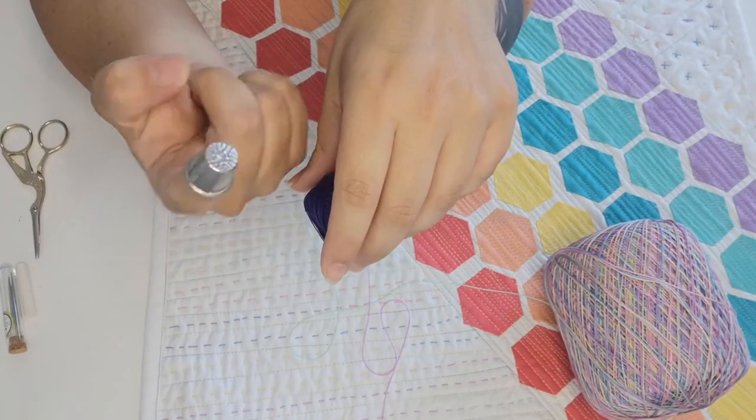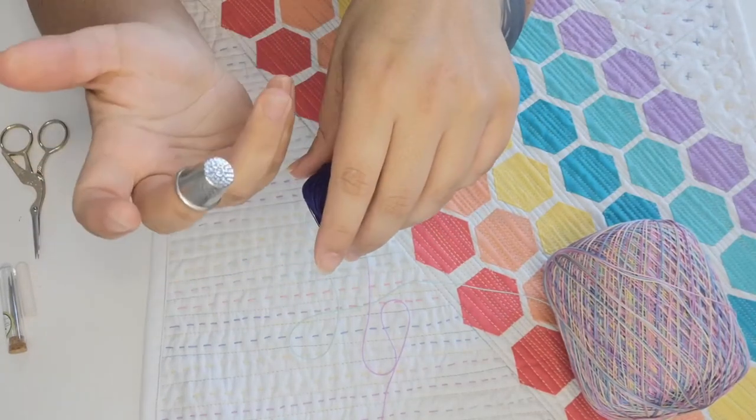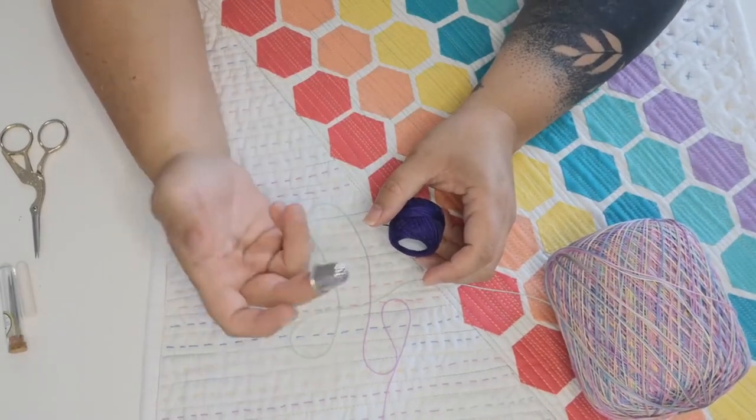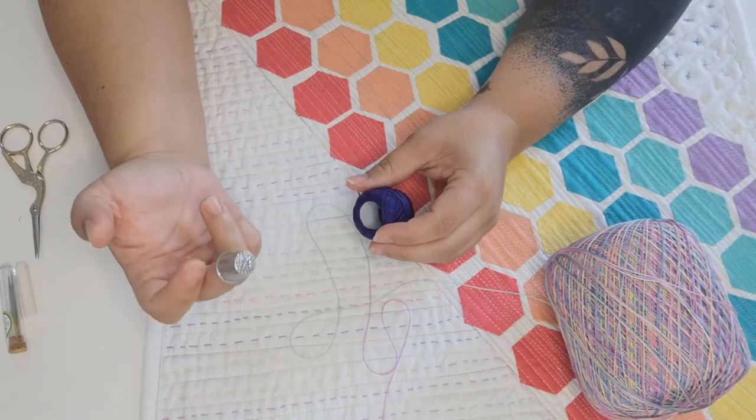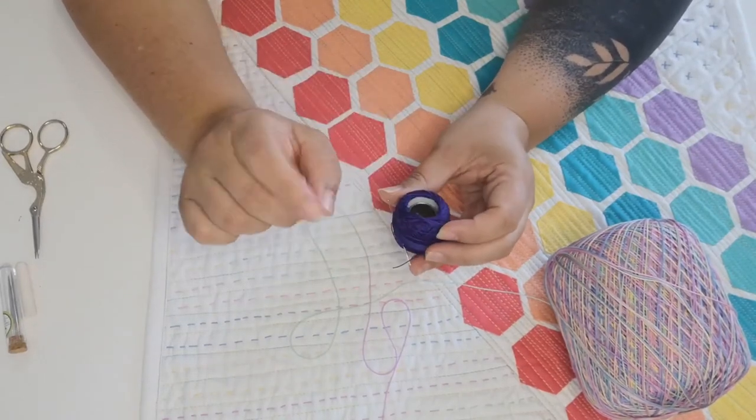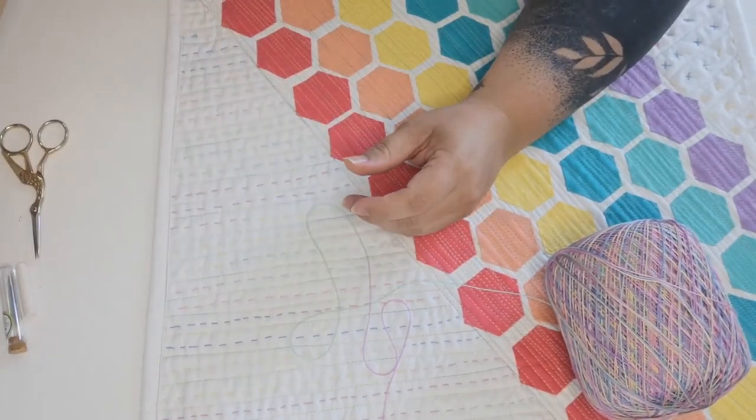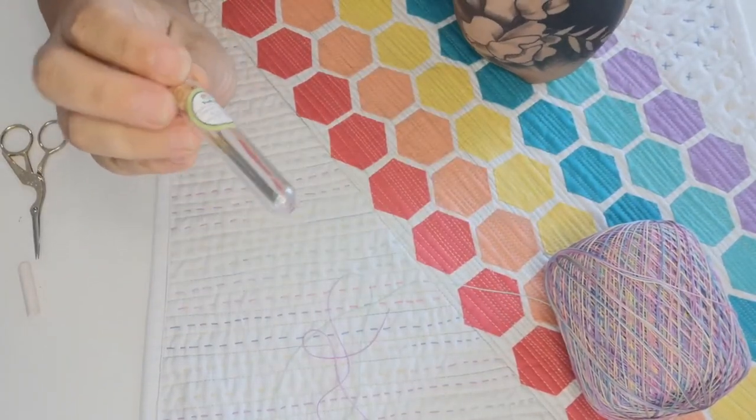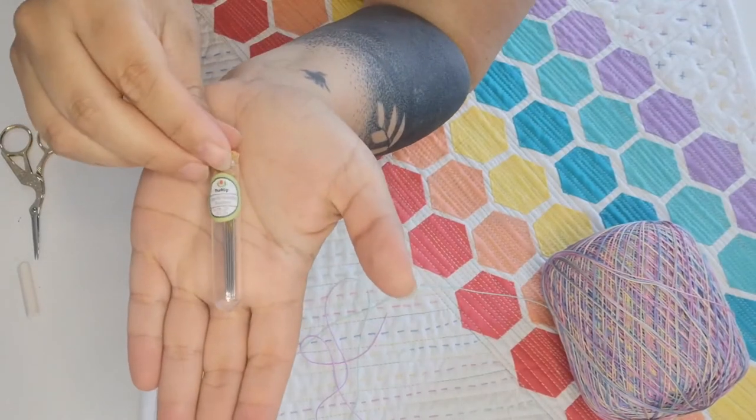Thimble - yes you need it. I like it on my middle finger because I use that to do the rocking motion and push it through all the layers. If you don't you will poke a hole through your finger. Ask me how I know. When I am doing my hand quilting with this thicker thread I can't use a regular needle.